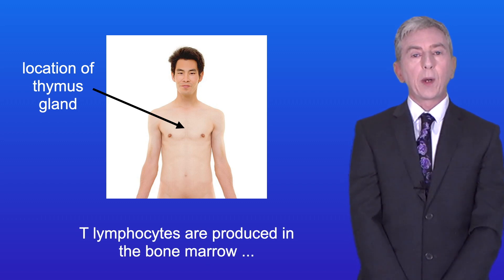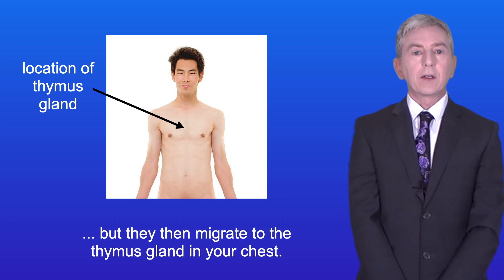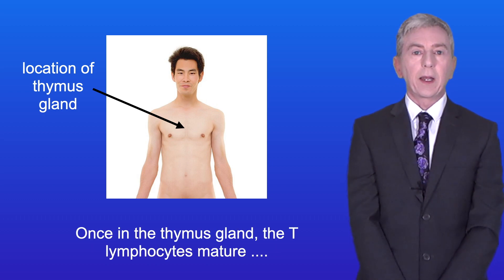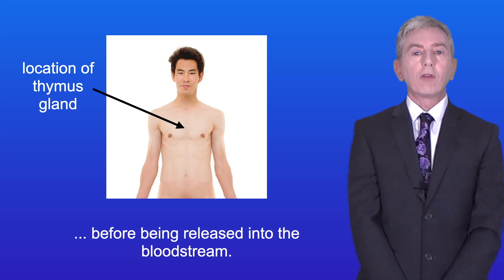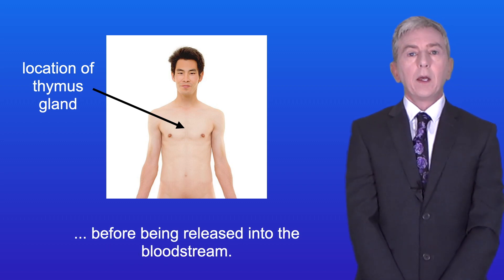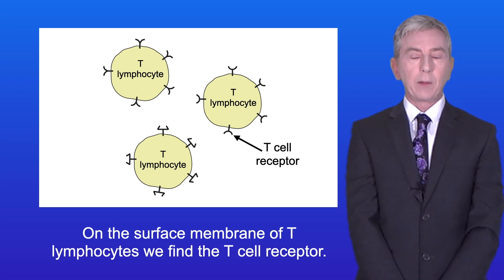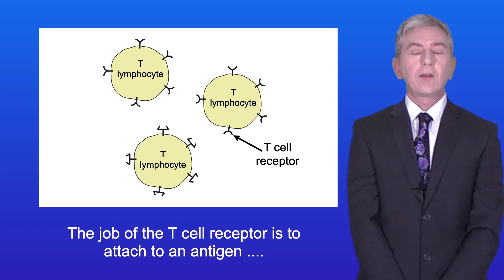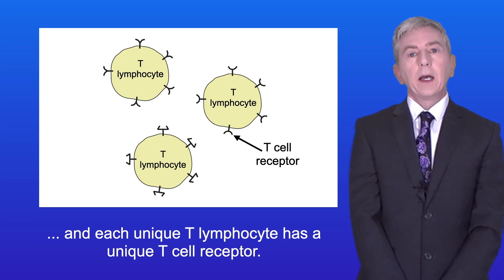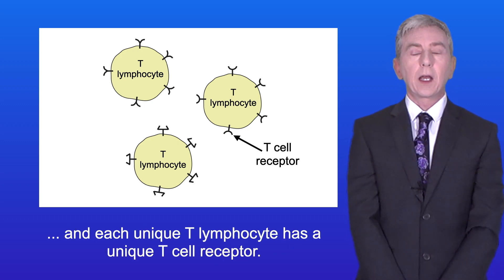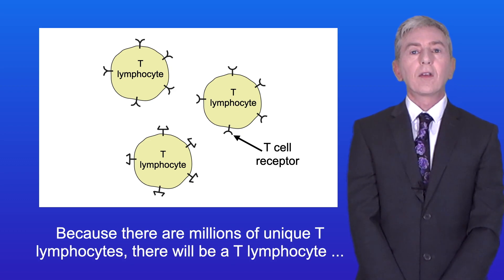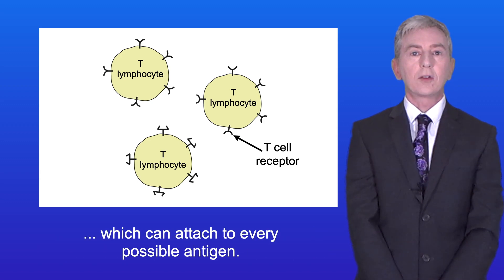T lymphocytes are produced in the bone marrow but they then migrate to the thymus gland in your chest. Once in the thymus gland, the T lymphocytes mature before being released into the bloodstream. On the surface membrane of T lymphocytes we find the T cell receptor. The job of the T cell receptor is to attach to an antigen, and each unique T lymphocyte has a unique T cell receptor. Because there are millions of unique T lymphocytes, there will be a T lymphocyte which can attach to every possible antigen.